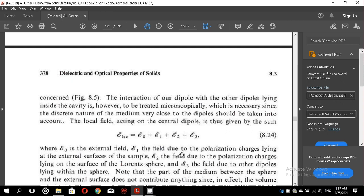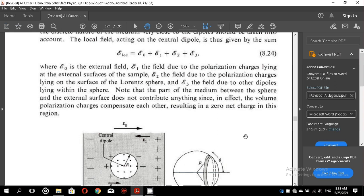E1, the field due to the polarization charges lying at the external surfaces of the sample. E2 is the field due to the polarization charges lying on the surface of the Lorentz sphere. You must note down the difference between E1 and E2. E3 is the field due to other dipoles lying within the sphere. Note that the part of the medium between the sphere and the external surface does not contribute anything else in the electric field.